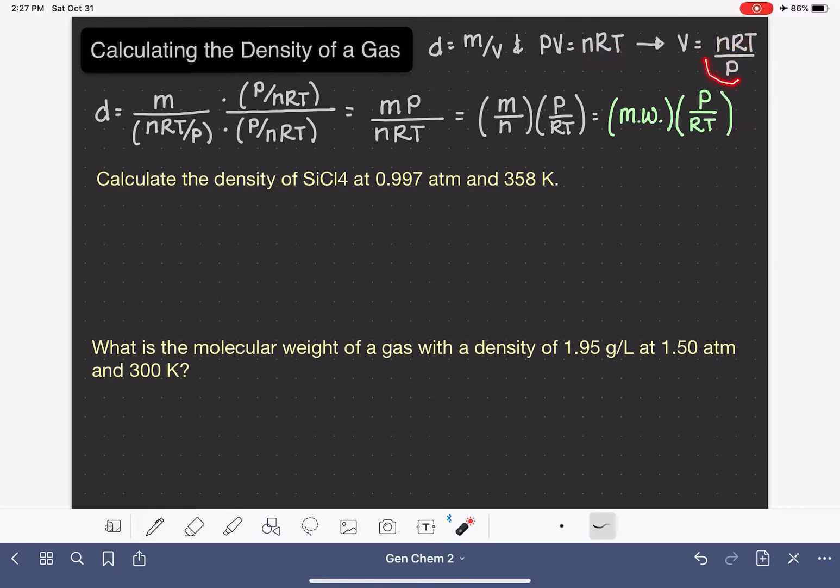And what we're going to do is take this term and plug that into the density equation in place of V. That's going to give us this equation. Density equals mass over volume for a gas, which is nRT divided by P.